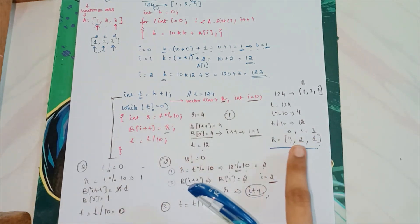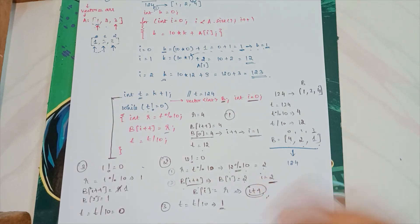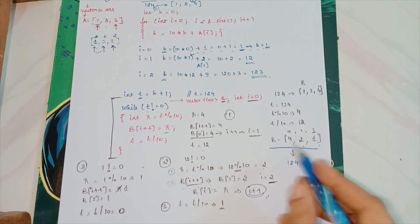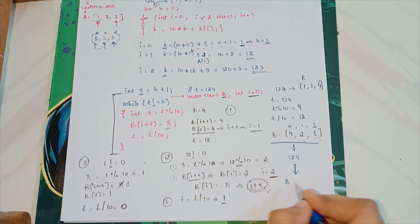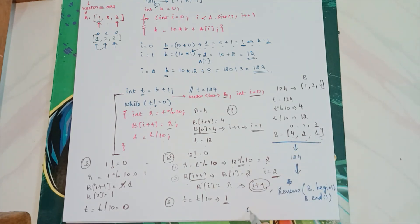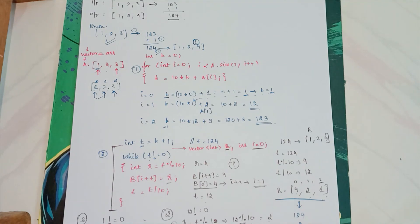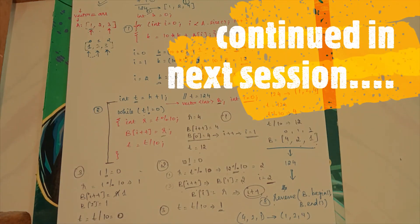Since we have a vector, we can easily reverse it using predefined functions — that's why I suggest vectors over arrays, since arrays would require a manual for loop to reverse. Using reverse(B.begin(), B.end()), we go from [4, 2, 1] to [1, 2, 4], giving us the final answer. So the three steps — conversion, addition, and splitting with reversal — together give us the complete solution.